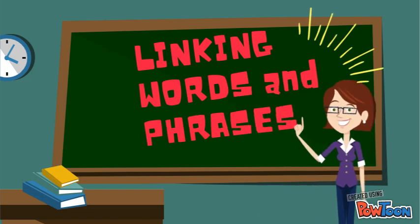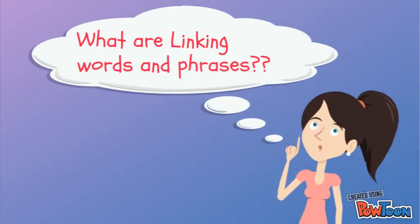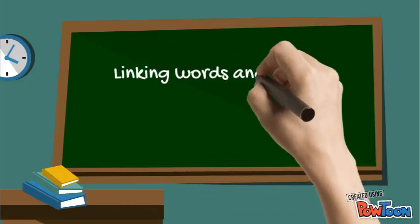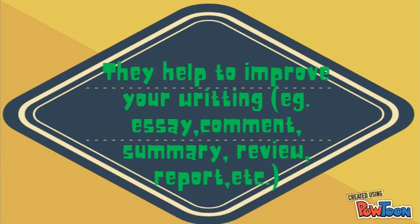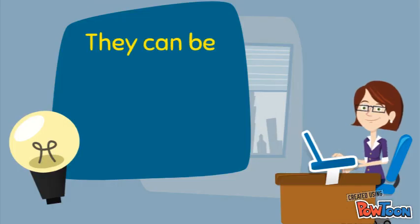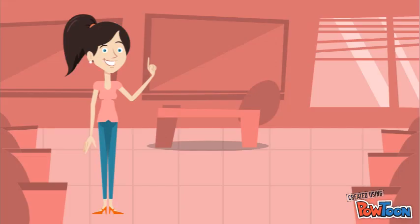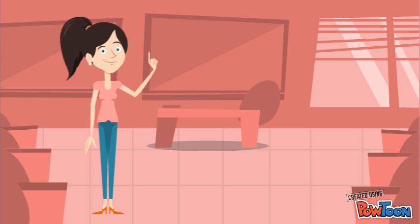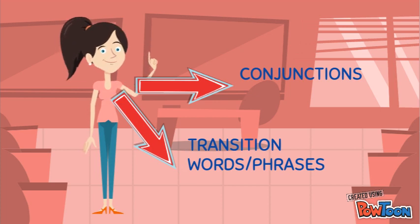Today we're going to talk about linking words and phrases. Linking words and phrases are used to show relationships between ideas. They can be used to join two or more sentences or clauses. There are two categories of linking words: conjunctions and transition words or phrases.